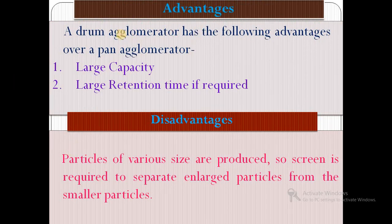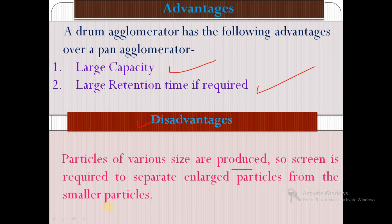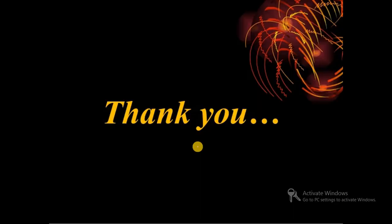The drum agglomerator has the following advantages over the pan agglomerator: it has a large capacity and a large retention time if required. However, a disadvantage is that particles of various sizes are produced, so a screen is required to separate larger particles from smaller ones. Thank you all for listening to this video.